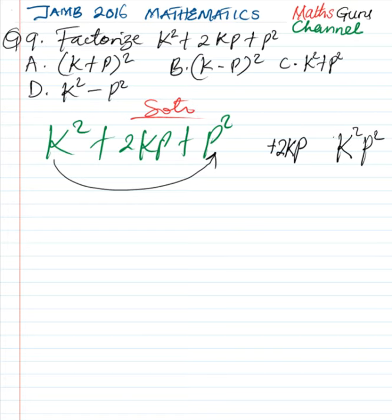This is positive as well. So what we are to look for now is what two terms when we add or subtract we are going to have 2kp, positive 2kp. And when we multiply these same terms, we are going to have k square p square.